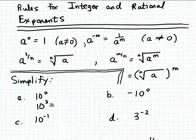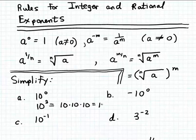To simplify 10 to the third power, the exponent tells us to use the base 10 as a factor three times. So 10 cubed equals 10 times 10 times 10, and computing that product gives us 1,000.